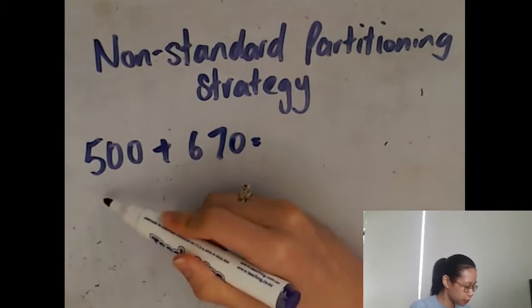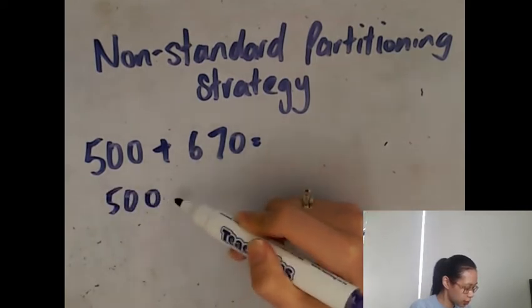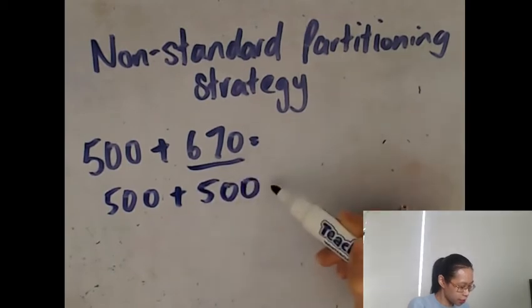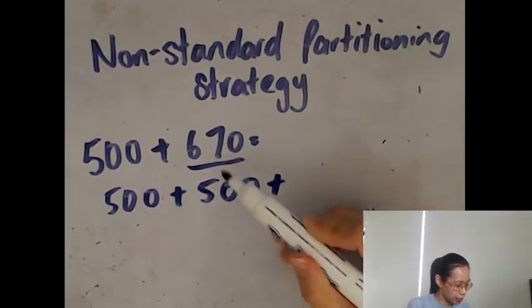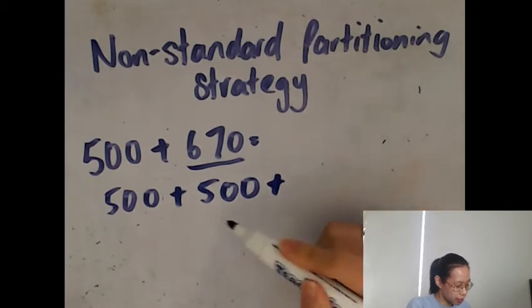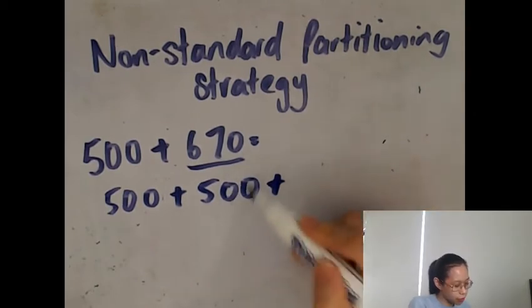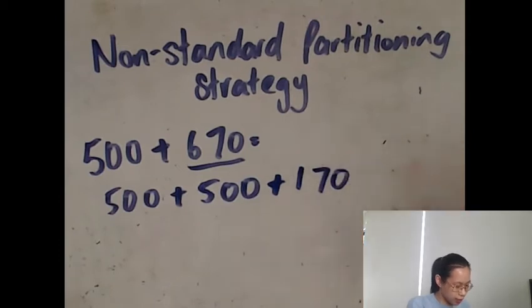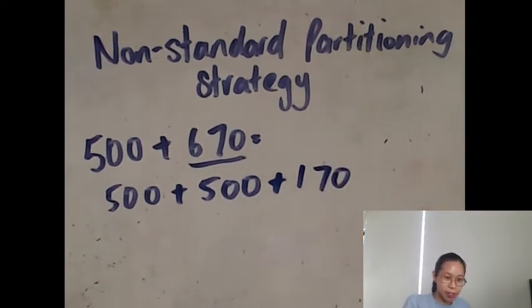You can do 500 plus 500, and we've got to make up 670. So that's 500 plus 500 plus 170, and then it's much easier to do.